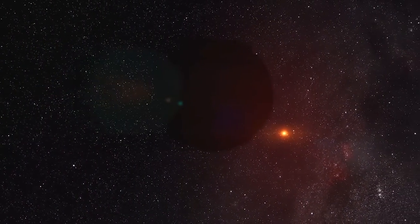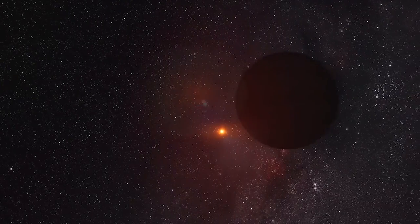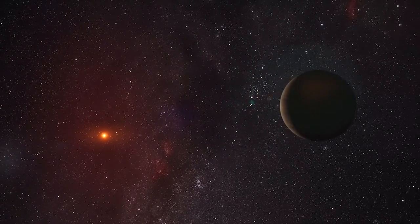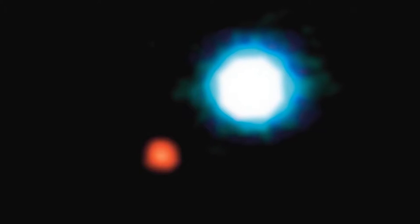And in some cases, you can even capture exoplanets on camera. In 2004, NACO, the adaptive optics camera on the Very Large Telescope, took the first image ever of an exoplanet. The red dot in this image is a giant planet orbiting a brown dwarf star.